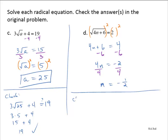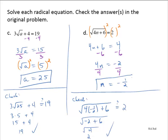Let's check this. Is the square root of 4 times negative one-half plus 6 equal to 2? Following the order of operations, this gives me the square root of negative 2 plus 6, which is the square root of 4, which equals 2. So 2 does equal 2, and the solution is n equals negative one-half.